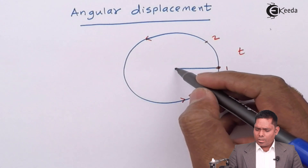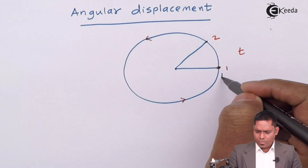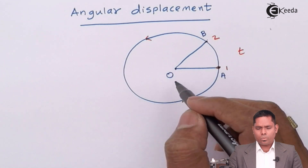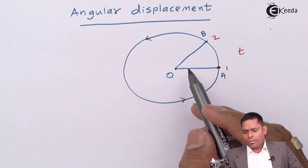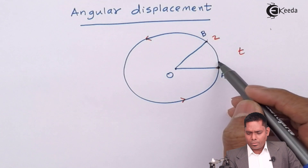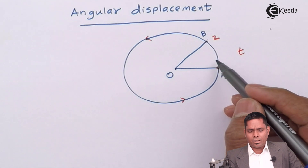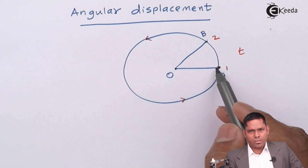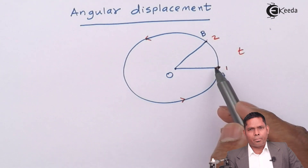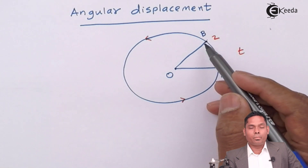In this situation, suppose this point is A, this point is B, and this point is O. When the body moves along the circumference, what is changing is — this distance is not changing, because it is moving in the circle and the radius remains constant. So the distance OA and OB will remain the same.